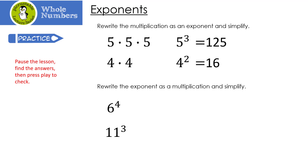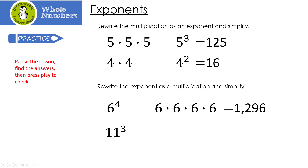Rewrite the exponent as a multiplication and simplify. Six to the fourth power — we're going to take six multiplied by itself four times: six times six times six times six. That gives us 1296. How about 11 to the third power? That would be 11 times 11 times 11, which turns out to be 1331.